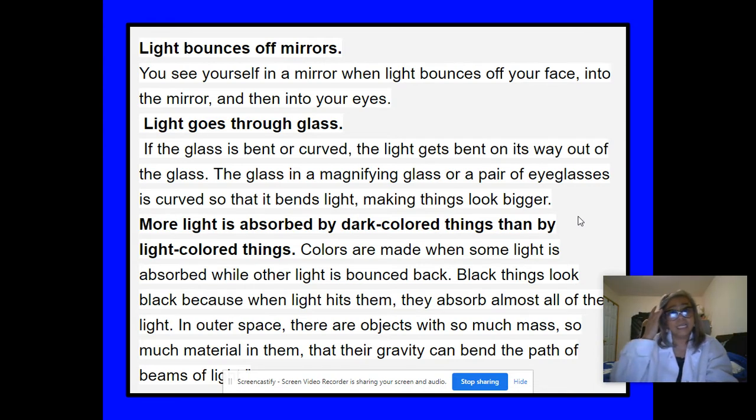Also, more light is absorbed by dark-colored things than by light-colored things. I'm sure all of you know this by now. Colors are made when some light is absorbed while other light is bounced back. Black things look black because when light hits them, they absorb almost all of the light. In outer space, there are objects with so much mass, so much material in them, that their gravity can bend the path of the beams of light.